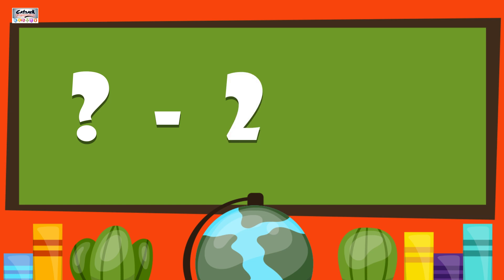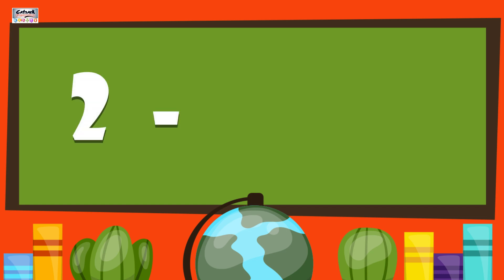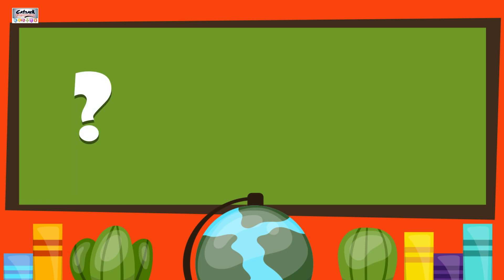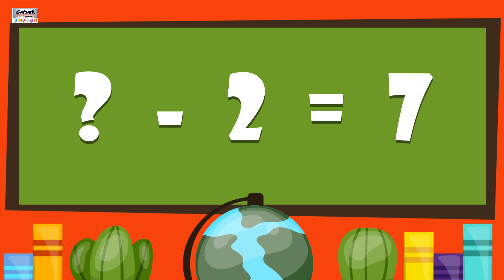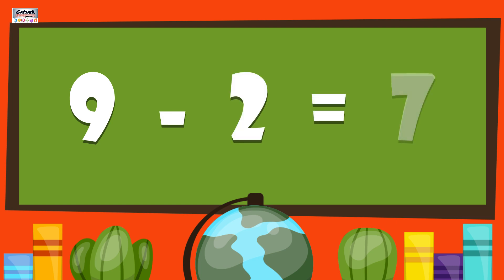What minus 2 gives us 4? 2 minus 2 gives us 0. What minus 2 gives us 7? 9 minus 2 gives us 7.